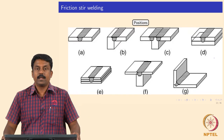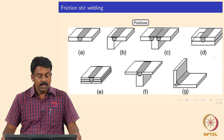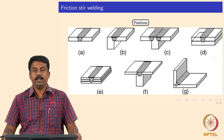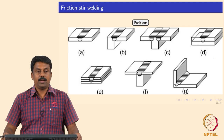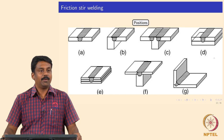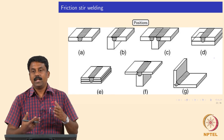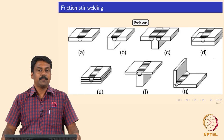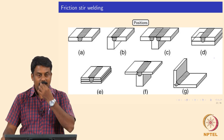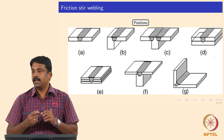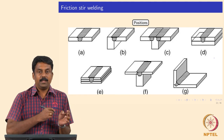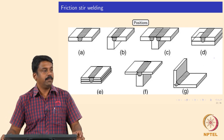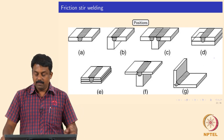What are the positions that can be welded using friction stir? One major disadvantage is accessibility — similar to resistance spot welding, you cannot access the joint with a pin and shoulder if the geometry does not permit. You need reasonable access; otherwise you cannot insert the shoulder and pin to make a linear weld. In most cases we can adjust the geometry of the weld to still achieve the weld.